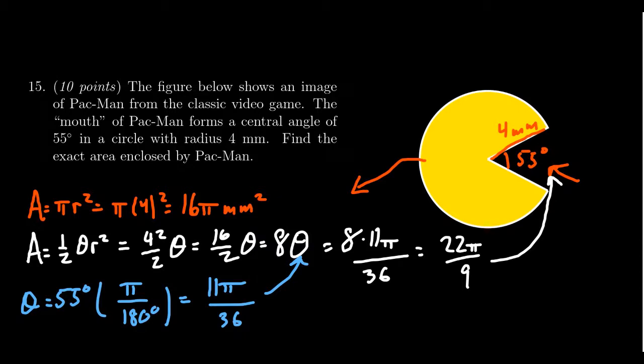We need to take the total area, which is 16 pi millimeters squared, and subtract from that the 22 pi over nine. So we're going to take 16 pi minus 22 pi over nine.